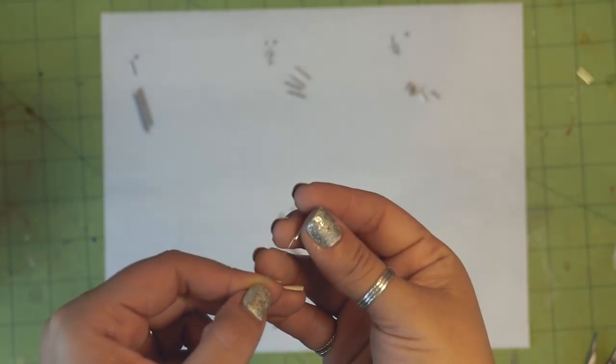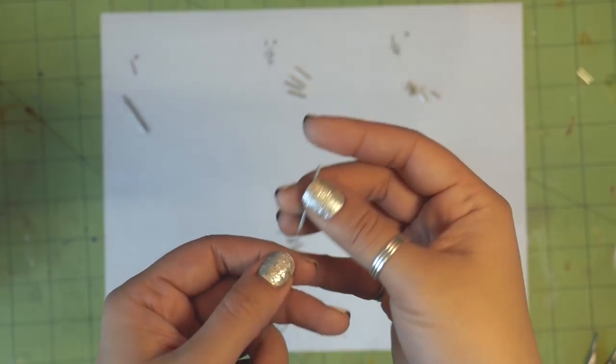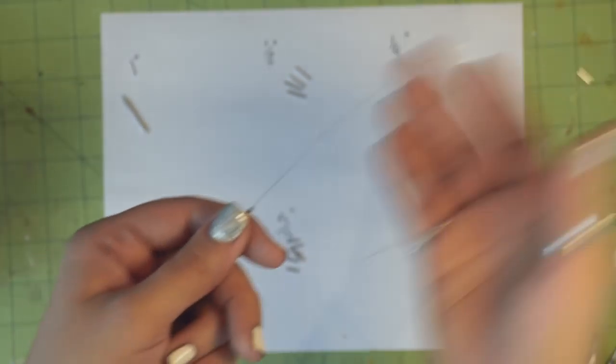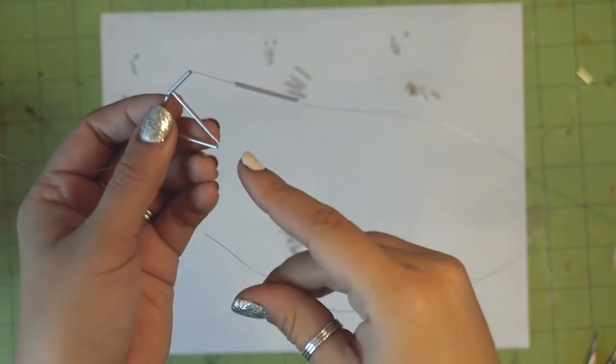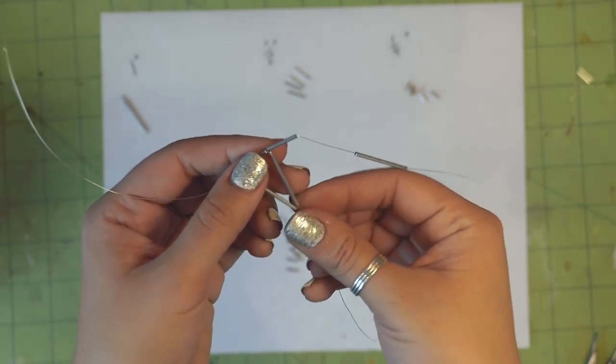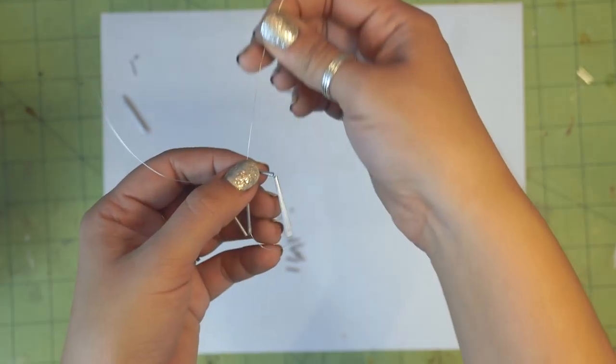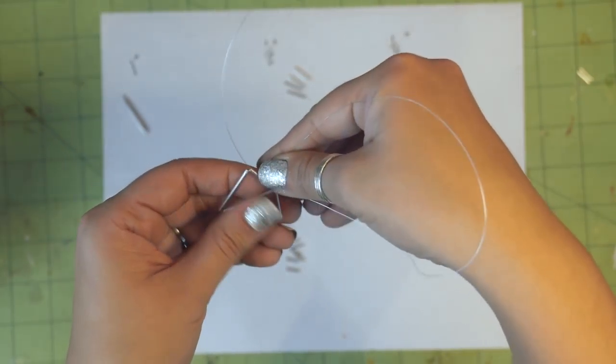With one of the wires, thread on a half inch piece followed by a 1 inch piece. Thread it back through the first 1 inch piece. And then back through the half inch piece that you just added.